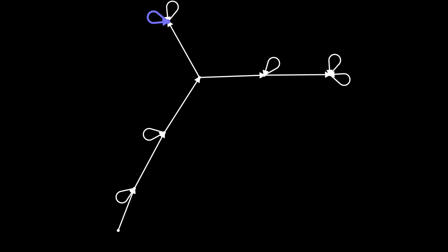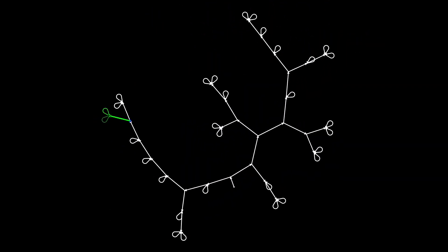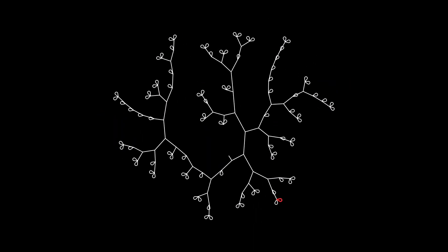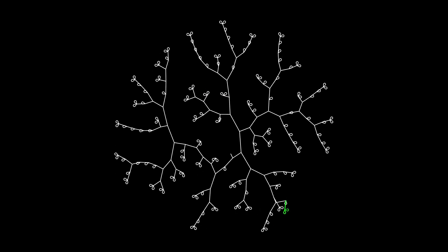We can apply rules to loops and self-loops in the same way as to any other edges. Take this simple rule: to apply the rule, we find a self-loop on one node, delete that self-loop, and create a new edge from that node to a new node, as well as two new self-loops on that new node. Since any self-loop can generate a new edge to a new node with two new self-loops, the rule gives a branching, tree-like universe.